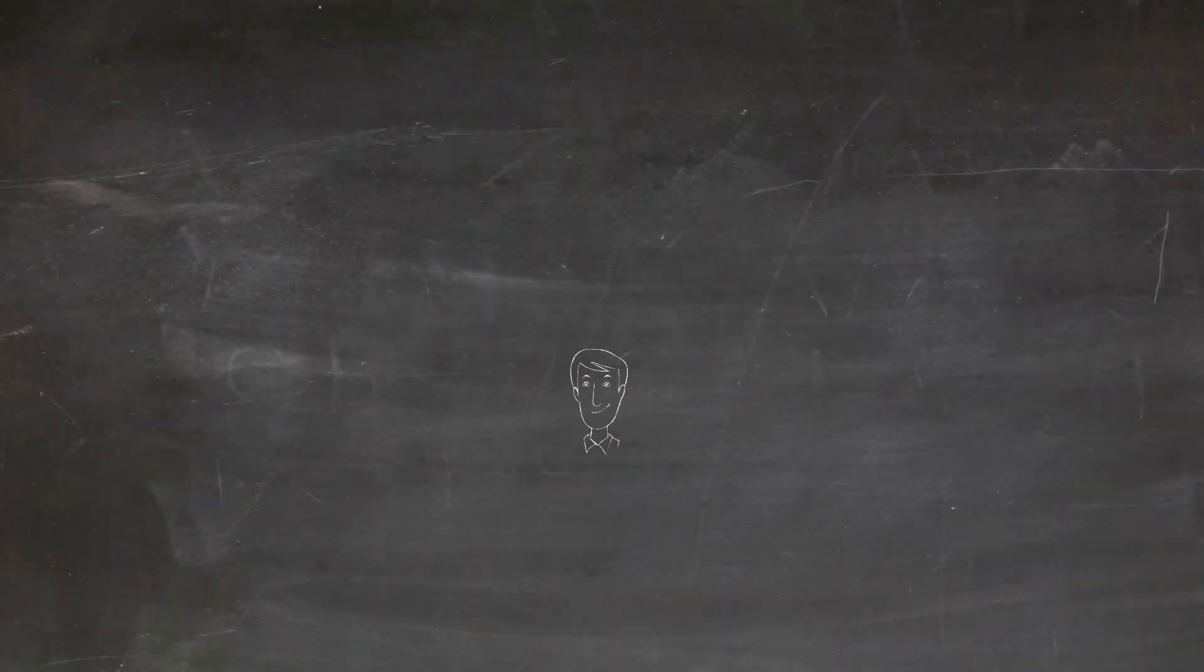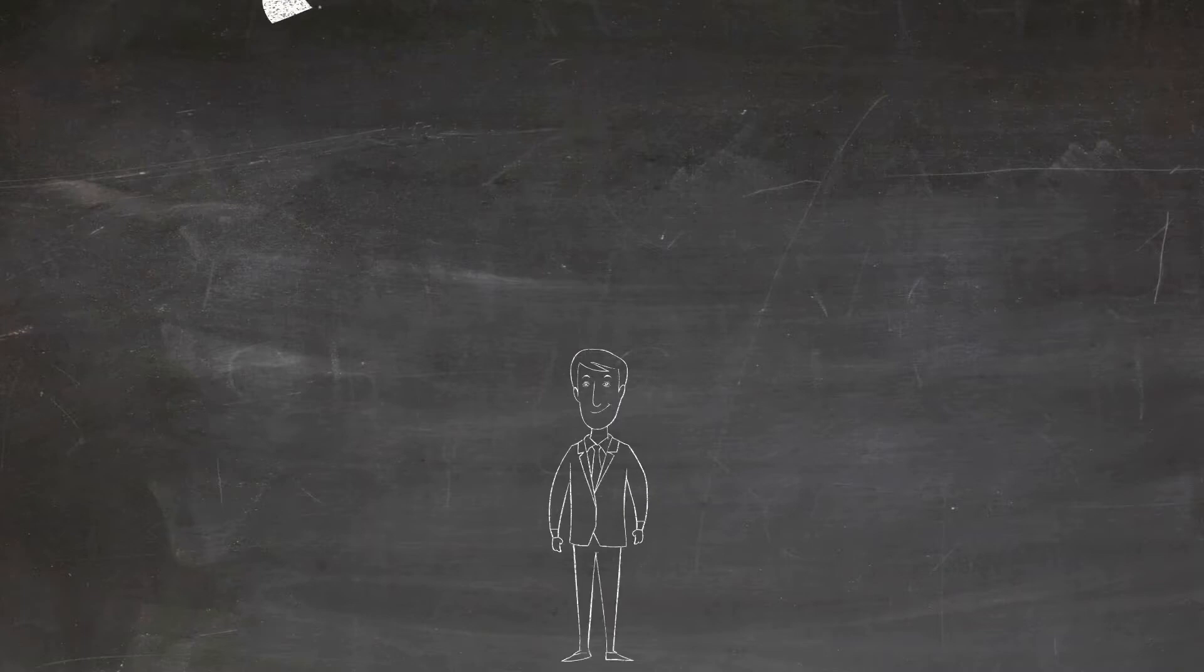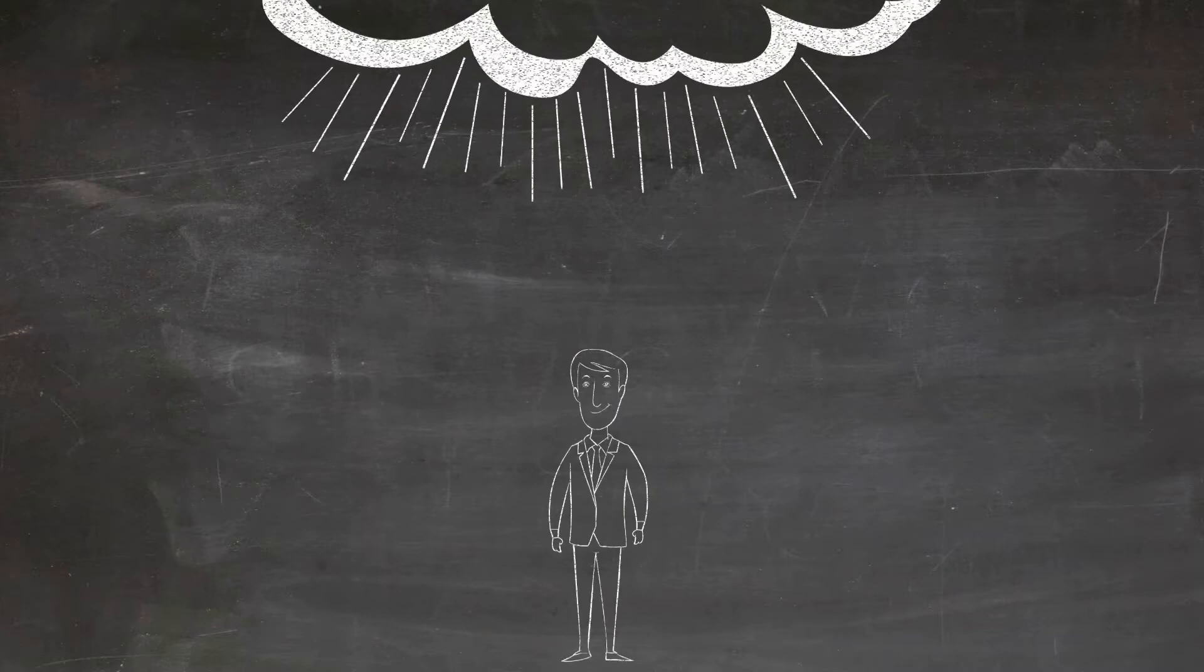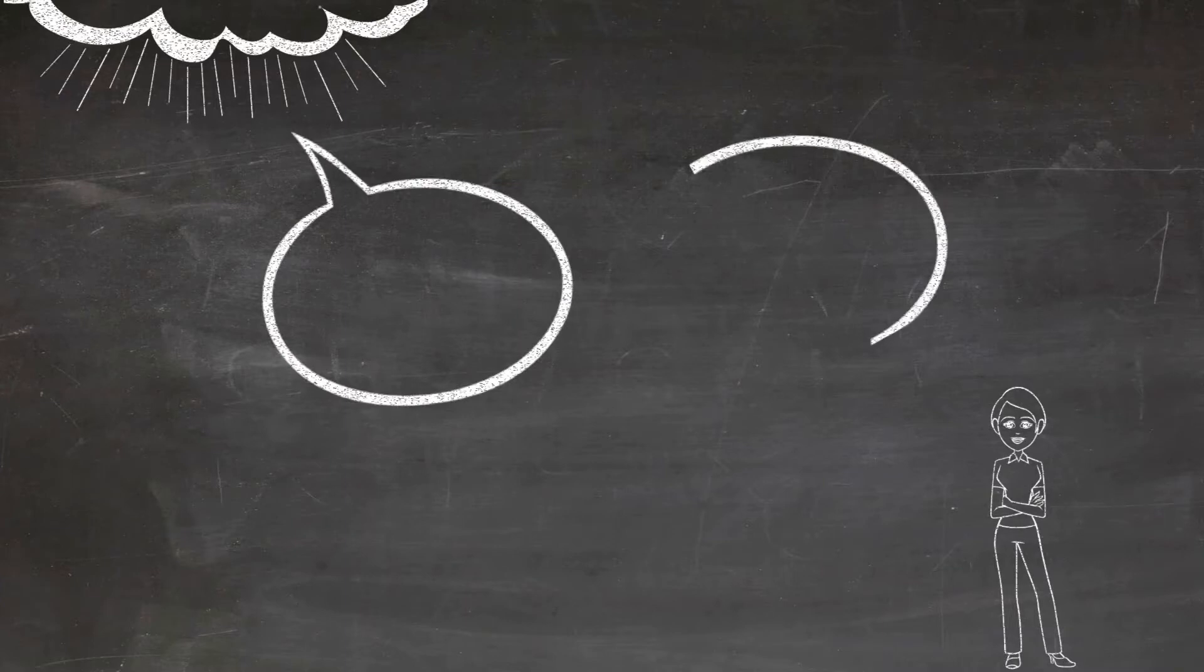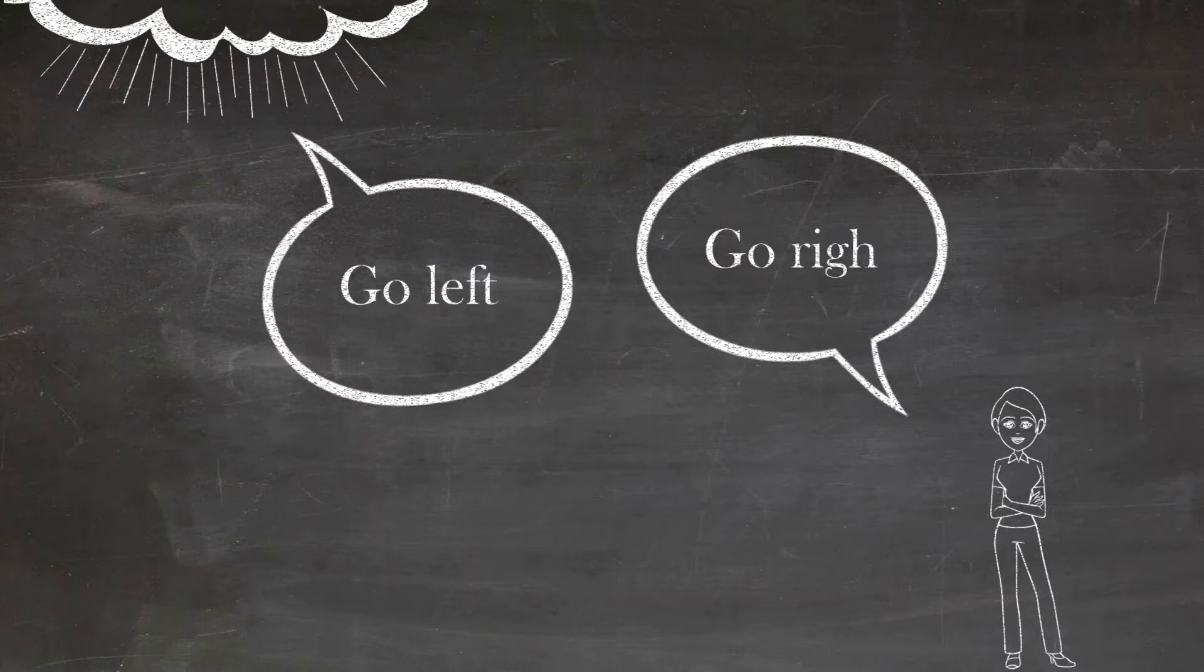Psalm 1 is about a righteous man and shows us how he lives compared to a wicked man. The psalm starts with talking about how the righteous man is blessed because of the things that he doesn't do. He does not walk in the counsel of the ungodly, which means that he makes sure that he is following the directions of God and not of ungodly people.